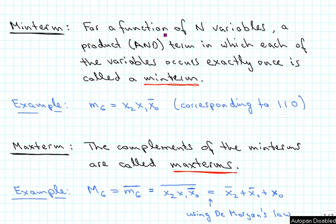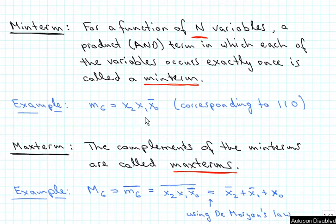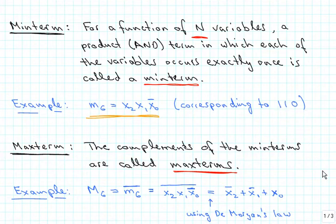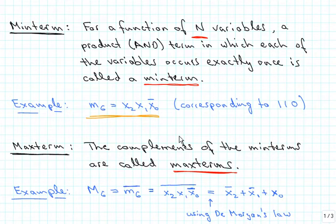For a function of n variables, the product or AND term in which each of the variables occurs exactly once is called a min term. So here is a little example: we have little m6, which corresponds to binary 1 1 0 — that's why it is called m6 — and it is equal to x2 AND x1 AND x0 complement. We use the positional system here where x2 is the most significant bit and x0 is the least significant bit.